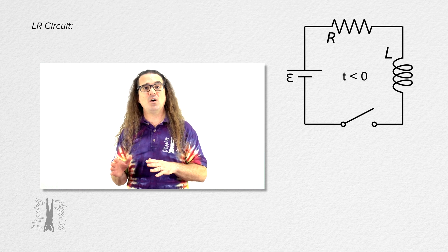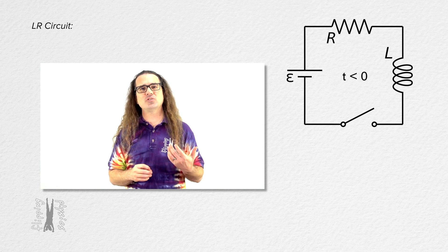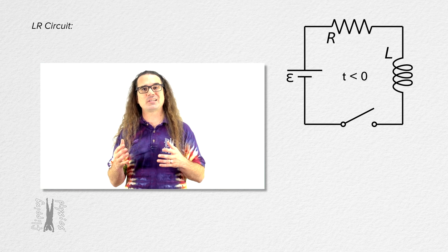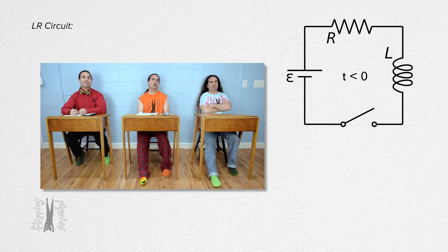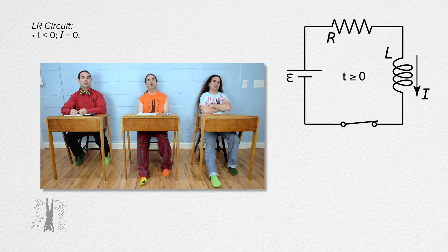Tell me what we know about the initial current in the circuit — the current at time zero. Well, the switch has been open for a while before it is closed. So before the switch is closed, the current in the open circuit is zero. After the switch is closed, current flows through the circuit.